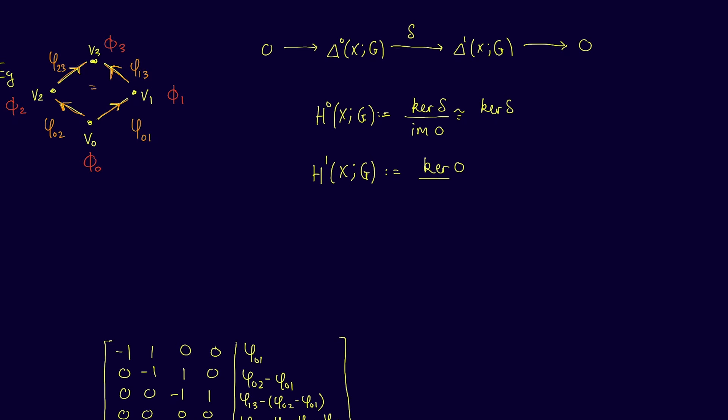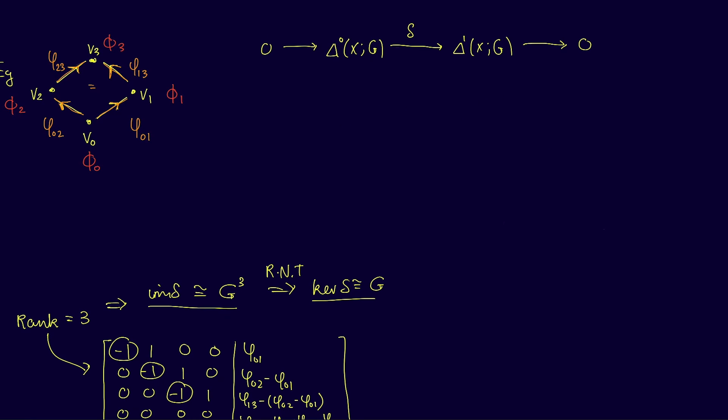Since the kernel of the zero map is all of Δ¹, then the first cohomology here is just Δ¹ modulo the image of δ. The image of δ is easily worked out by looking at the rank of the matrix shown earlier, which is three. Thus the image of δ is isomorphic to G³, three copies of G. By the rank-nullity theorem, the kernel of δ must then be isomorphic to a single copy of G. Indeed, it's straightforward to check that the kernel of δ is isomorphic to G.